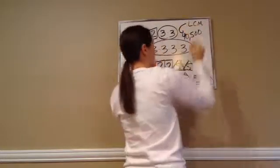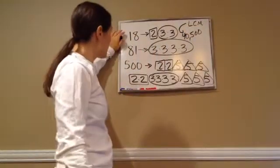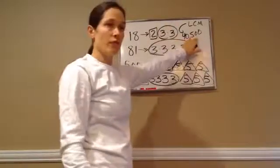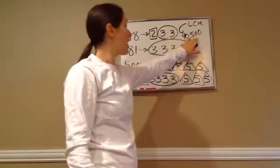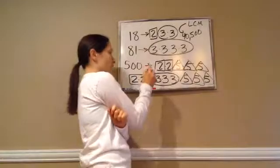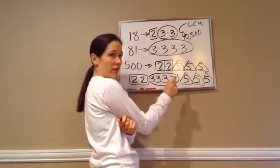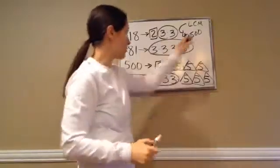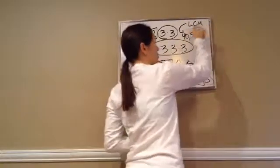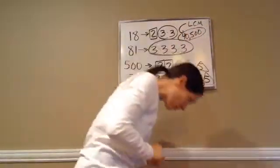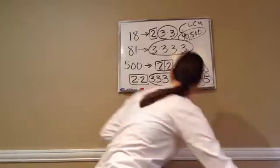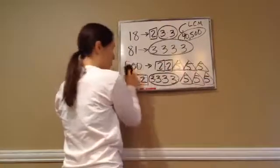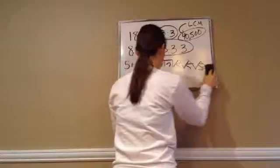Which equals 40,500. So the Least Common Multiple of 18, 81, and 500 is 40,500. Aren't you glad you didn't sit here and try to figure out what's the next multiple of 500, 18, 81? This would have been your Least Common Multiple. So let's do a few more of those, and then we're going to move to our new learning today.